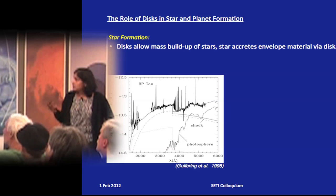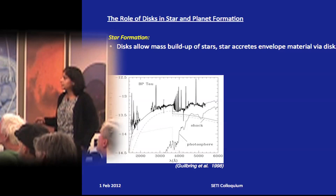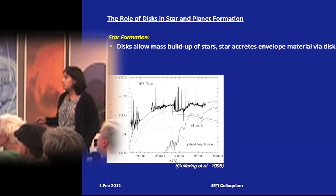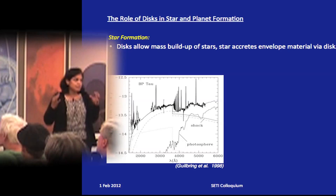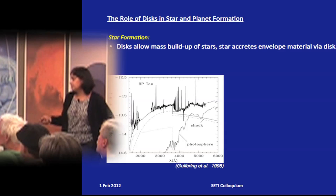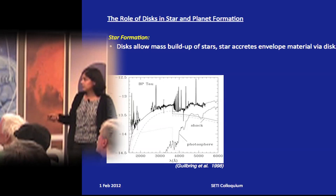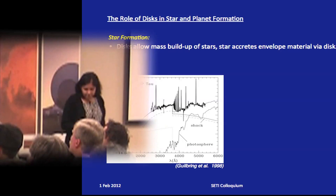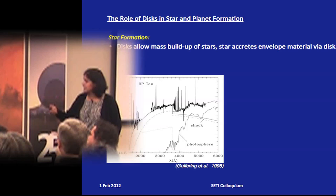In star formation, the disc allows mass buildup of the star as material flows through it to land on the star. This is the UV spectrum of young star BP Tau, showing that matter is actually falling onto the star. Material flows onto the star, gets shocked, and emits in the near and far UV. The dark lines are observations and the fit through them is a model showing shock emission.